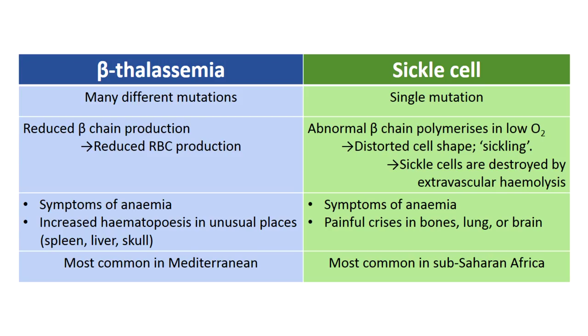In thalassemia there can be lots of different mutations all causing different problems at different points in the beta globin chain. In sickle cell disease it's always one mutation at the same place. In thalassemia you get reduced production of hemoglobin. In sickle cell disease these cells are misshapen and don't work very well. They're taken out of the circulation by macrophages in the spleen and as such this would be an example of extravascular hemolysis.